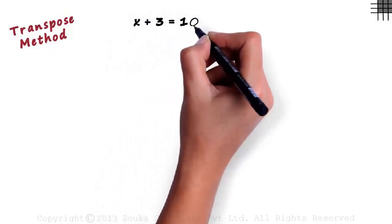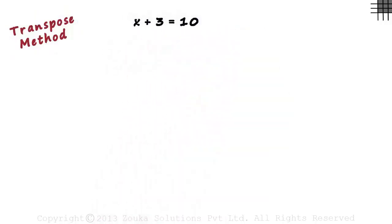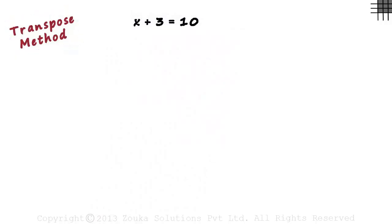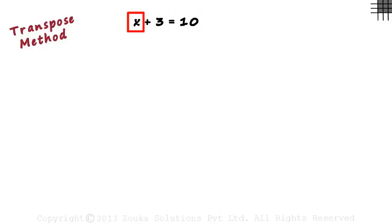We consider the same equation: x plus 3 equals 10. Before we actually implement the transpose method, we need to understand a few concepts. Look at this equation — we need just x on the left hand side and we need to get rid of this 3. This 3, as we can see, is added on the left hand side.